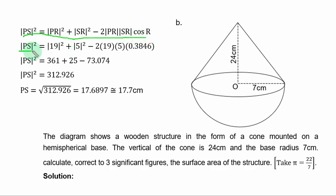You have the cosine rule. As I have said earlier, you are looking for PS. The square of it is equal to square of PR, 19, then SR is 5 minus 2 times the product of the two sides times cos R.